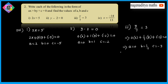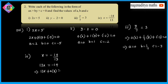Fourth one: x is equal to minus 14 by 13. Rearranging, 13x plus 0 times y plus 14 is equal to 0. Therefore a is equal to 13, b is equal to 0, and c is equal to 14.